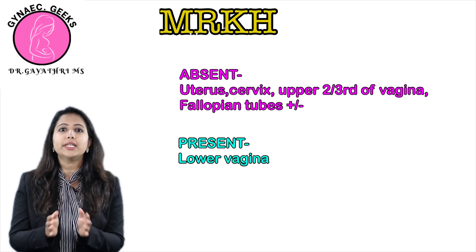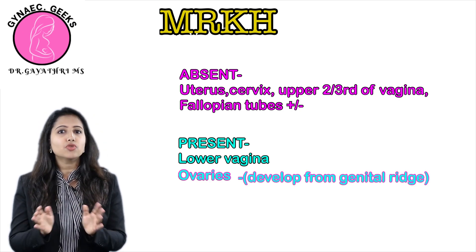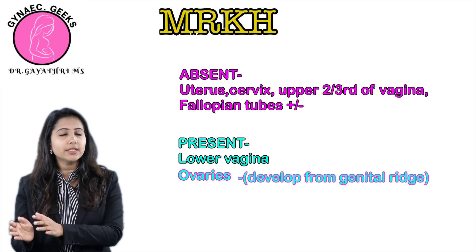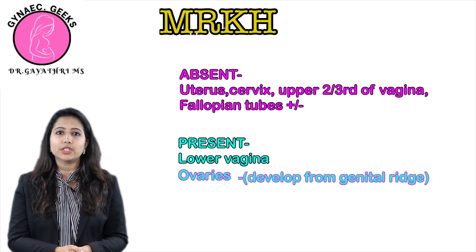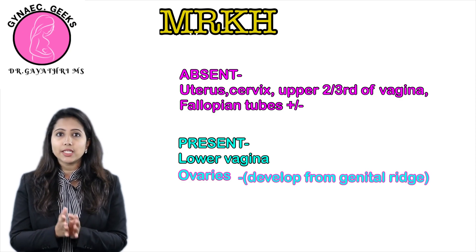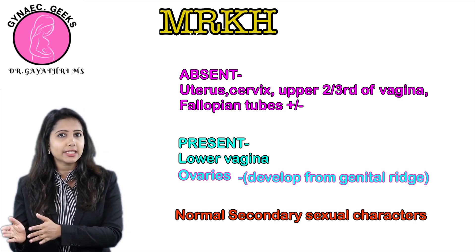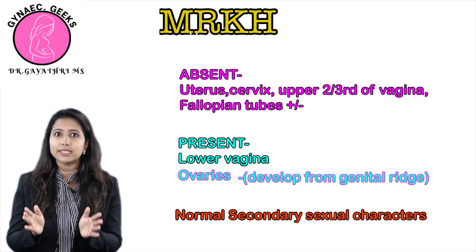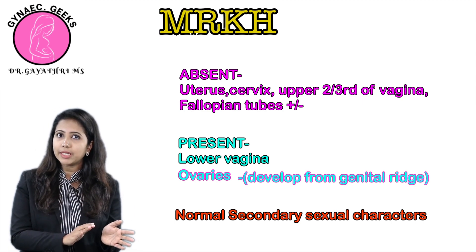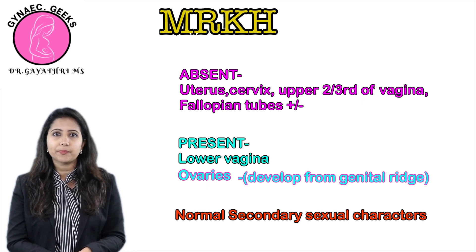As you might know, the development of ovaries is completely different. The gonads or ovaries are going to be normal in this condition. Therefore, the secondary sexual characteristics are going to be normal in these females — they will have normal breast development and normal axillary as well as pubic hair.